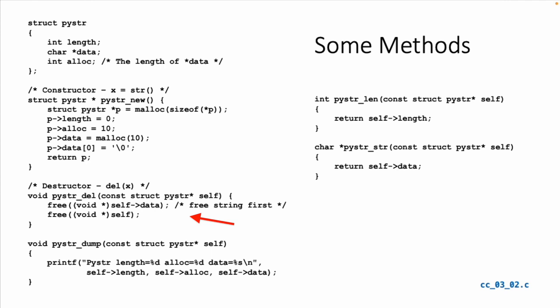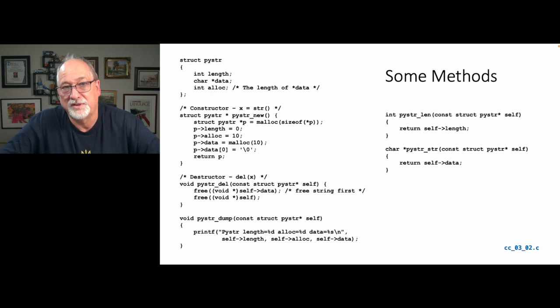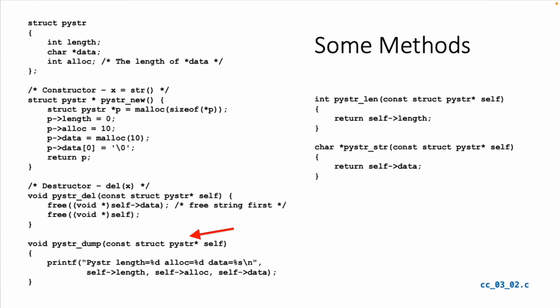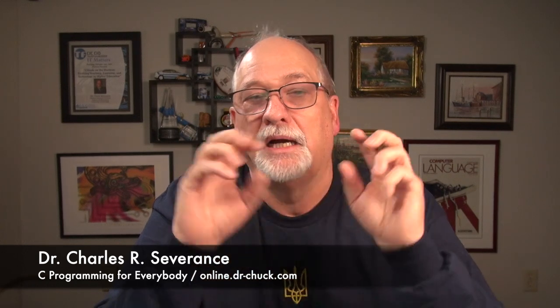The order of the two free statements matters a lot. When we free self, we're not supposed to access self anymore after that point — some data might still be there but you just don't know. That's why we have to free self arrow data before we free self; it's just wrong to do it in the other order. In PyStr dump, we dump out the length, how much we've allocated, and what the data is. PyStr len returns an integer taking self as a parameter and returns self length.